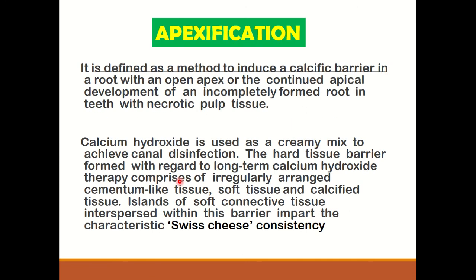Coming on to apexification: apexification is defined as a process to induce a calcific barrier in the root with an open apex. It can also be defined as creating an environment within the canal and periapical tissue after pulp death that allows a calcified barrier to form across the open apex. This calcified barrier consists of osteo-cementum and bone-like tissue. The procedure involves cleaning and shaping of the canal to remove debris and bacteria, followed by placement of paste to the apex. Calcium hydroxide is the most commonly used and most promising material.